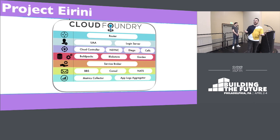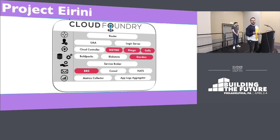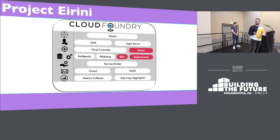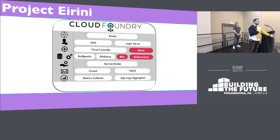This is how Cloud Foundry looks like today, and we're interested in the Diego components: BBS, auctioneer, cells, garden. With Irini, you have Irini as the bridge between Cloud Foundry and Kubernetes. It keeps everything in sync. You also have the bits service — the master of the blobs — which has the droplets and gives you a container representation of your application. Irini tells Kubernetes where to get the image from, and Kubernetes replaces all the Diego bits.